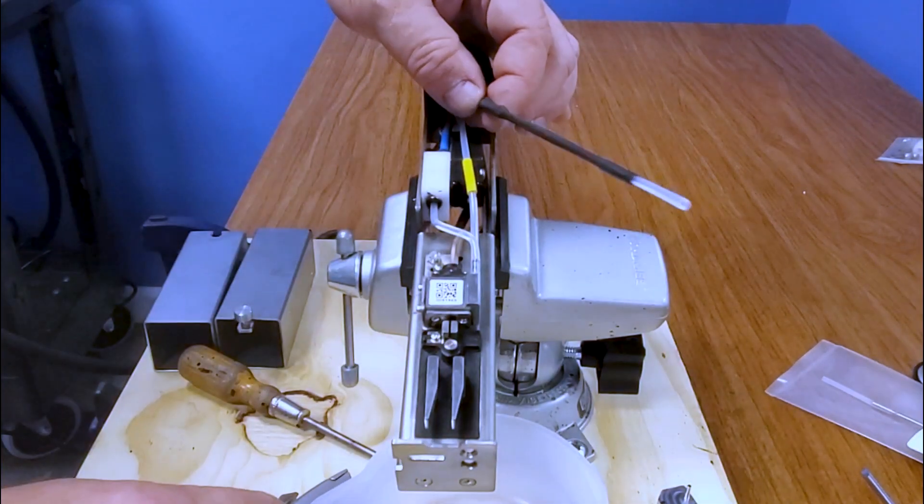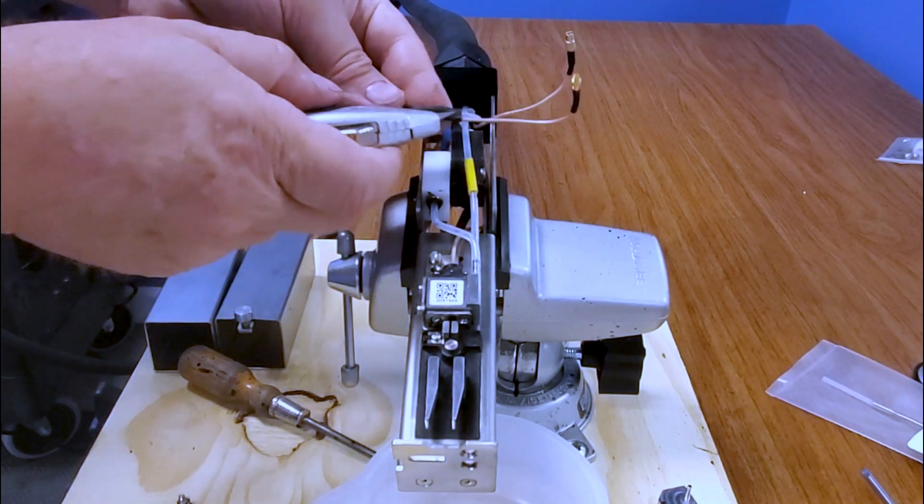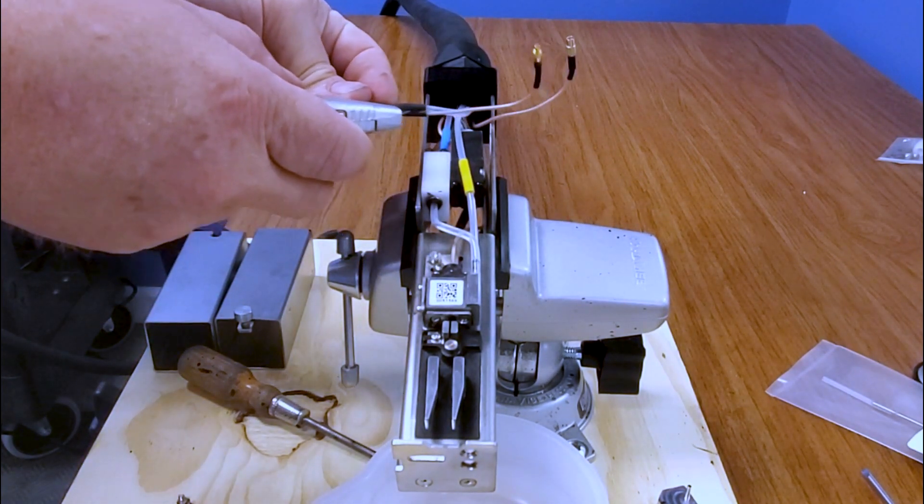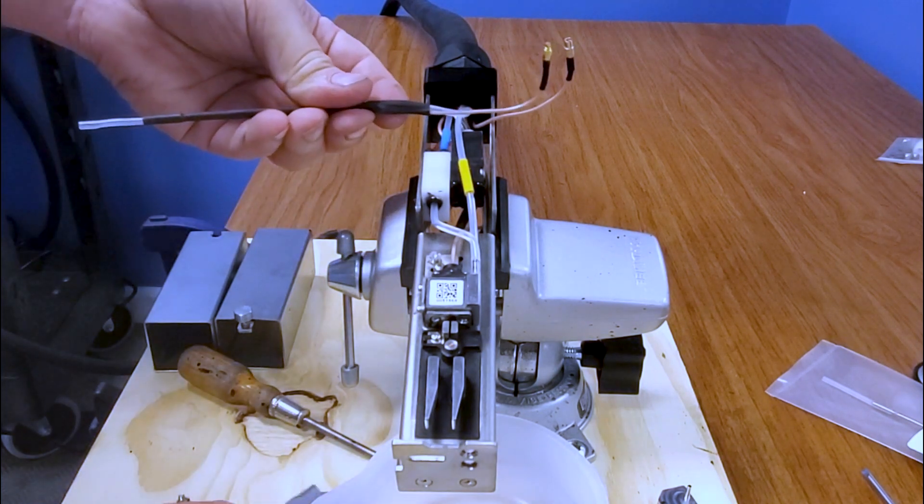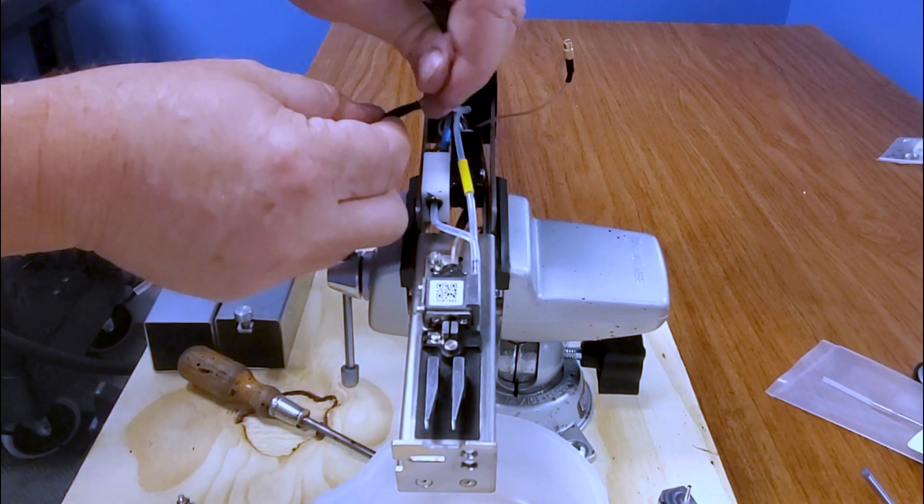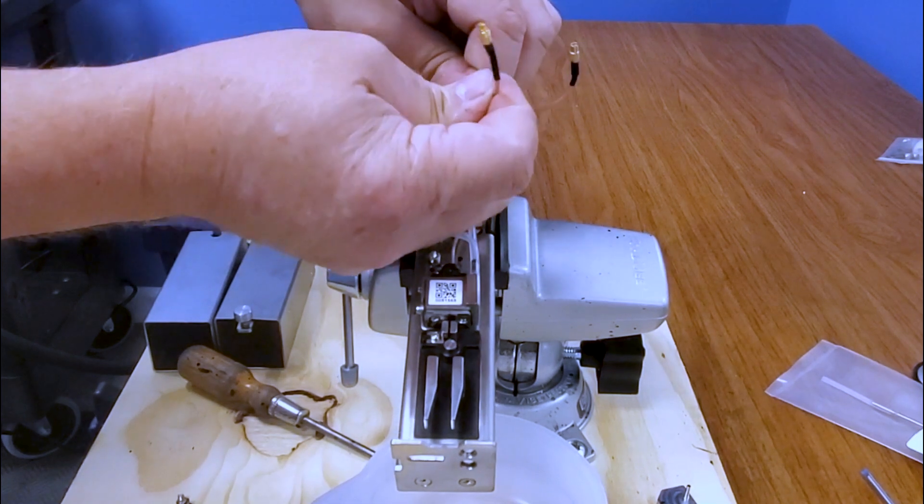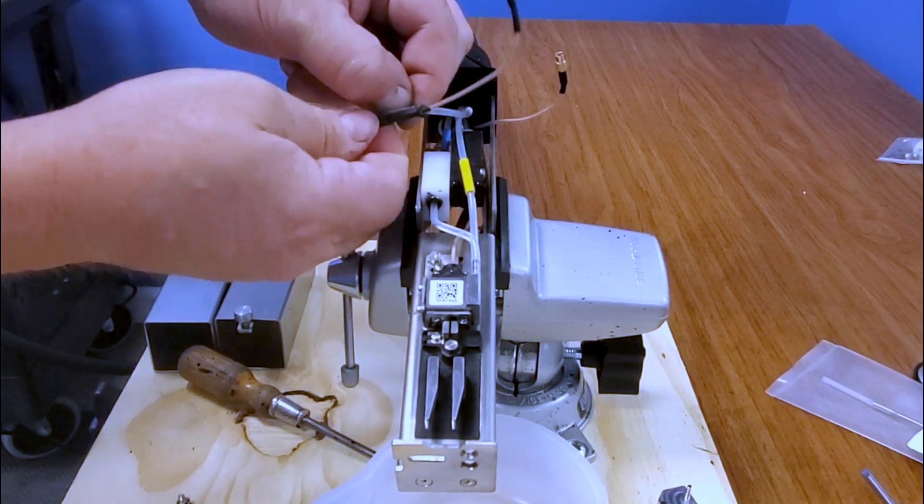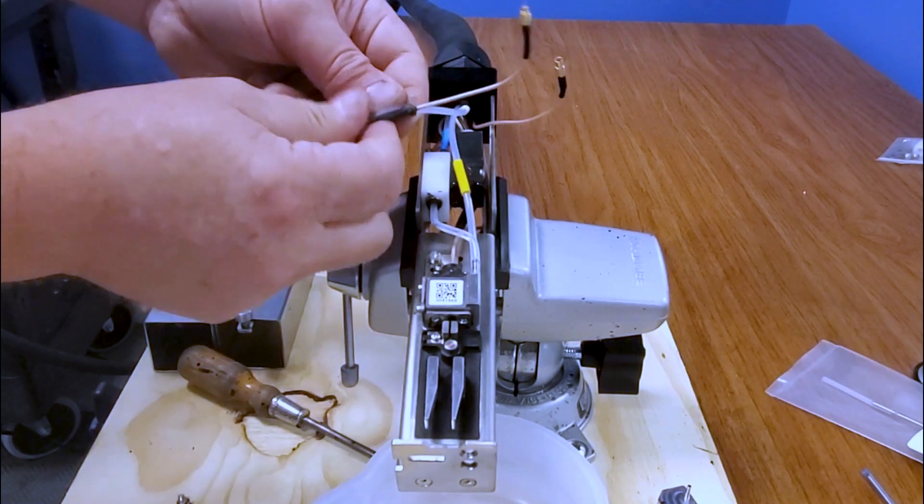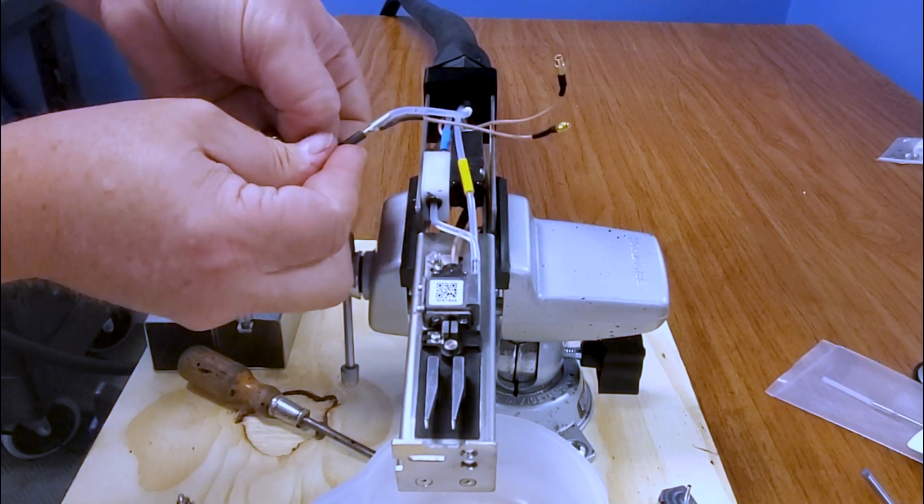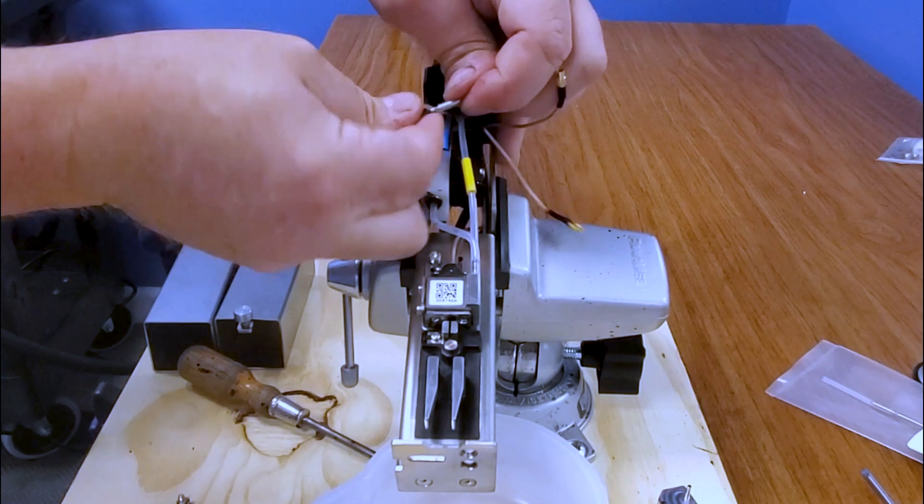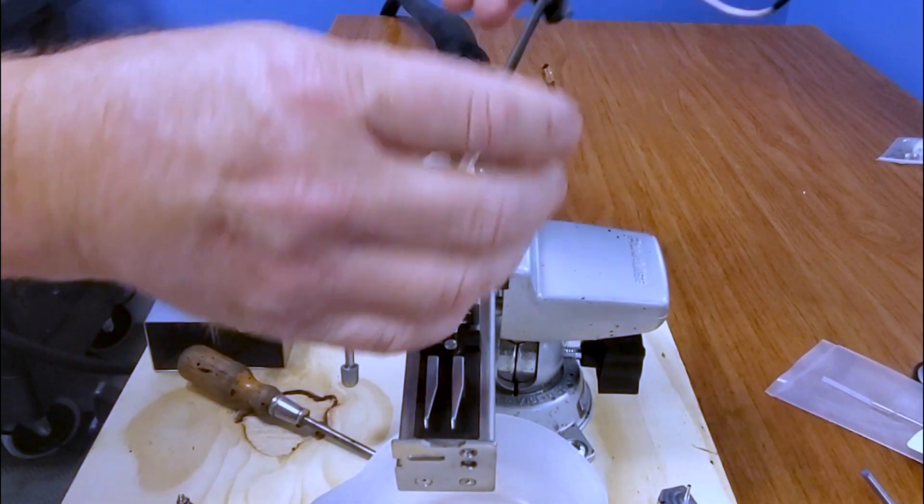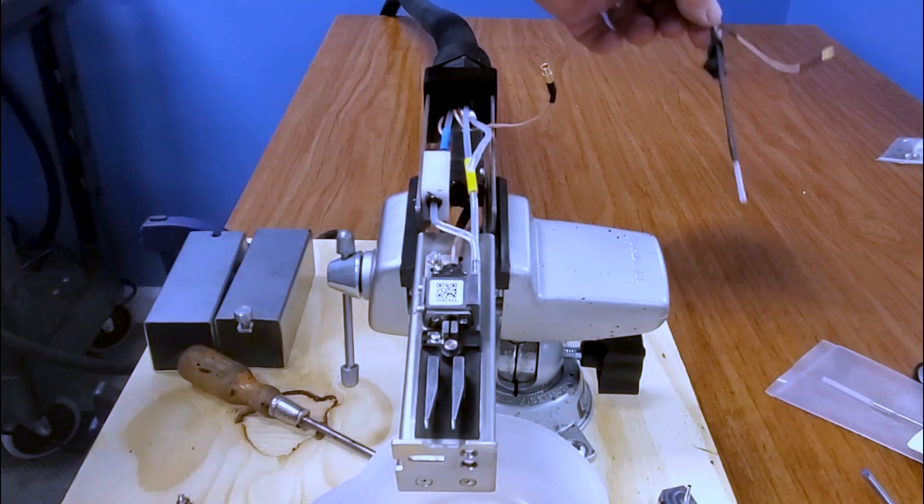Just put that to the side because we're going to be cutting away more heat shrink here to expose the other part that we're going to be disconnecting. Carefully, we're just going to rip this apart. We're going to pull the tube off of the gutter detect.